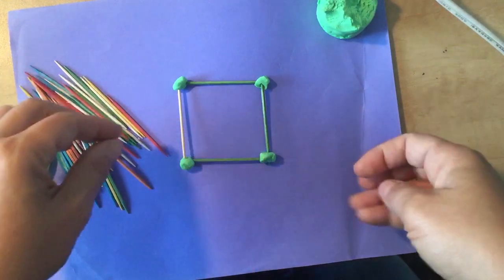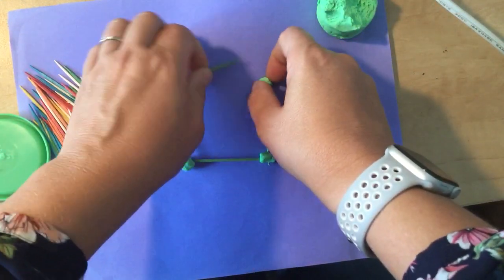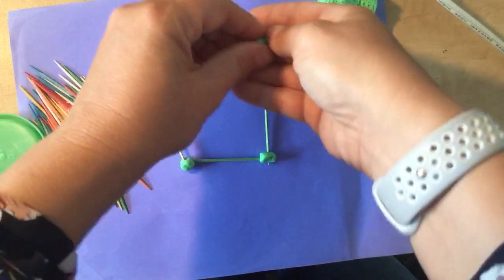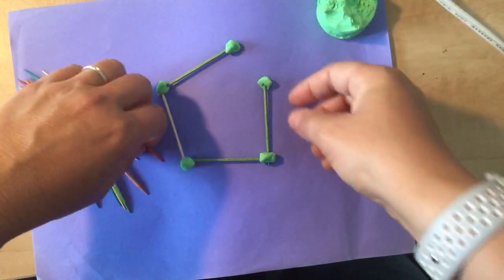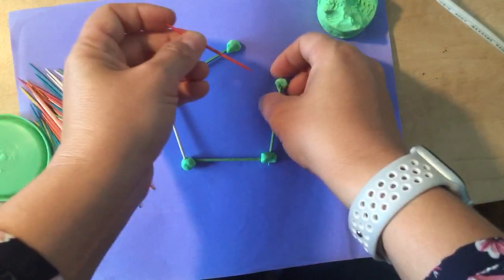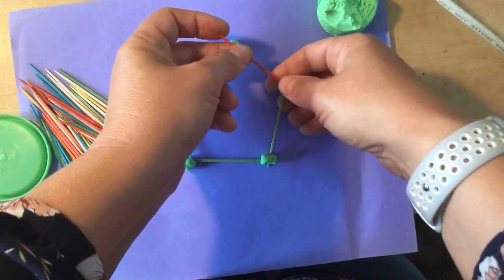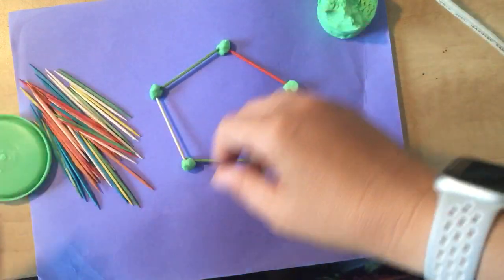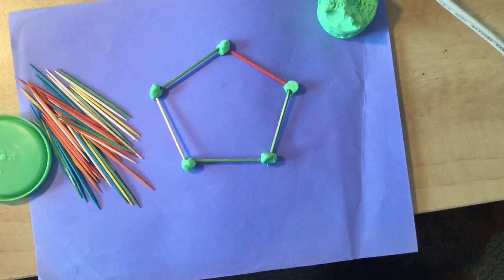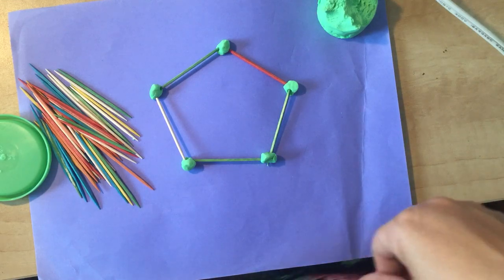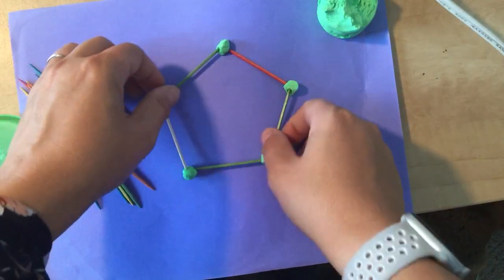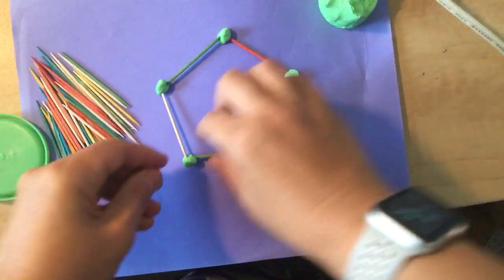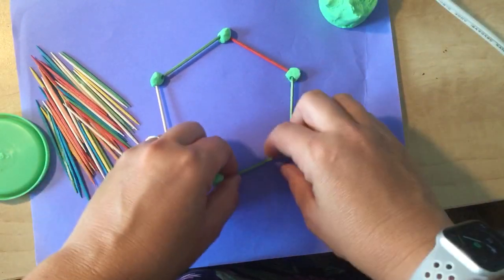Okay, and then let's see if we do another one. There's a five-sided shape. Does anybody know what a five-sided shape is? It's a pentagon. Yeah. All right, and then we can add another one and make a six-sided shape.